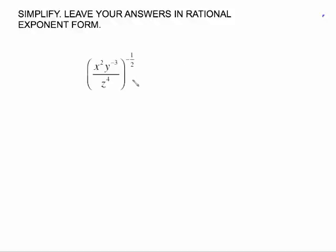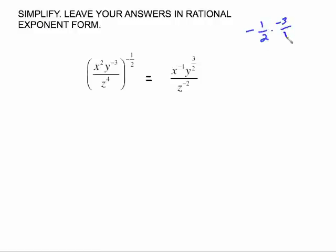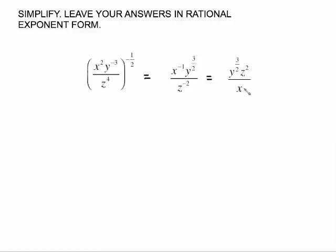Now let's deal with negative exponents. The first way is to distribute: the negative 1/2 distributes to everything inside the parentheses. Negative 1/2 times 2 gives negative 1; negative 1/2 times negative 3 gives positive 3/2; 4 times negative 1/2 gives negative 2. Then, negative exponents need to move to the opposite position — a negative exponent in the numerator moves to the denominator, and vice versa.